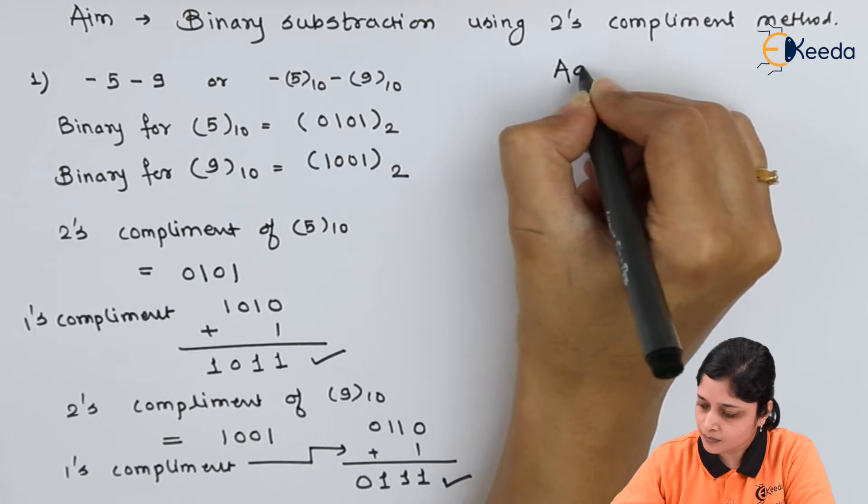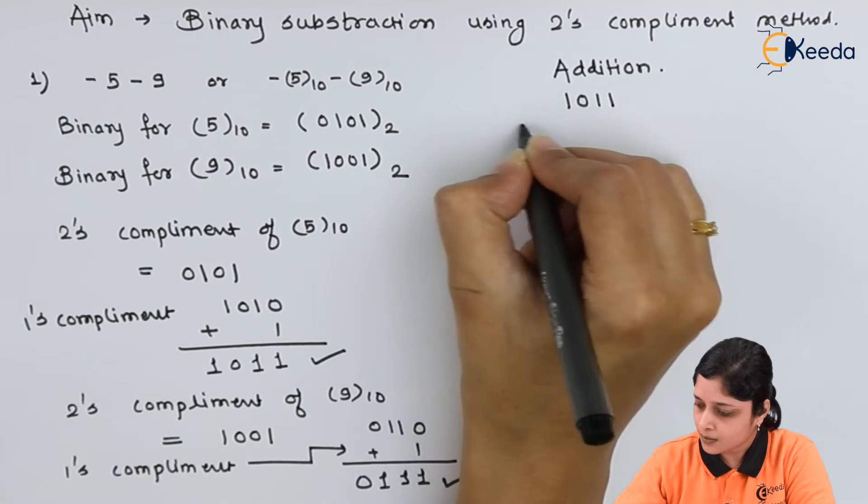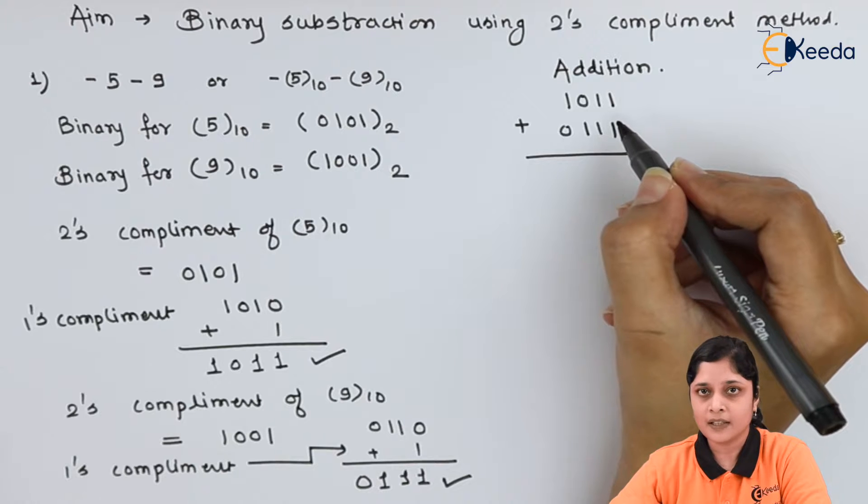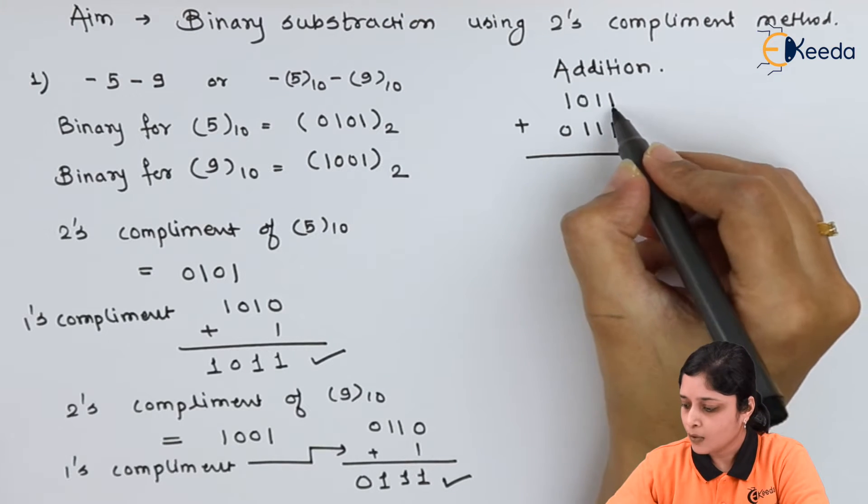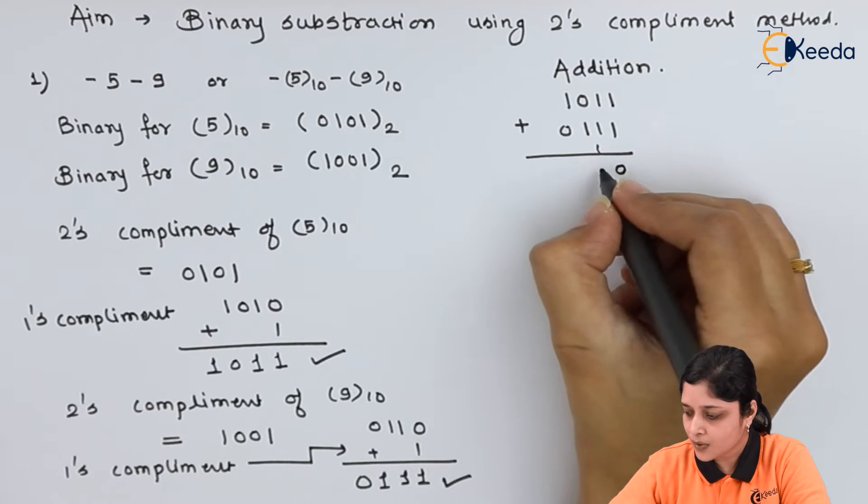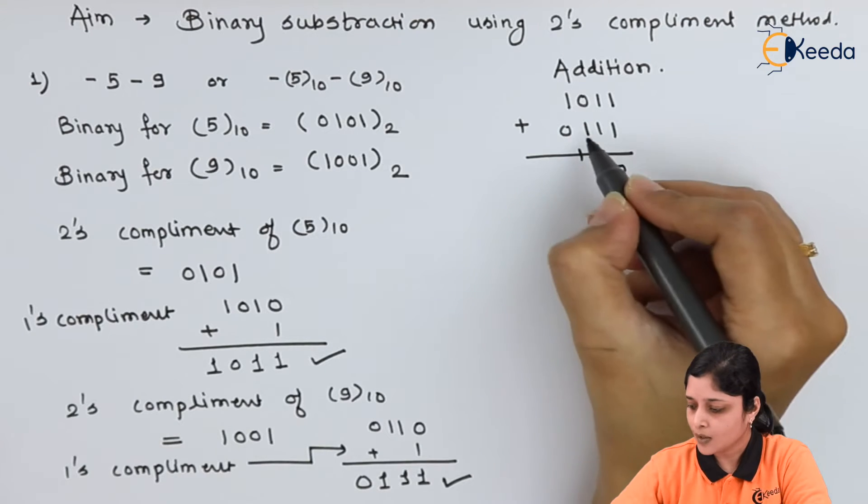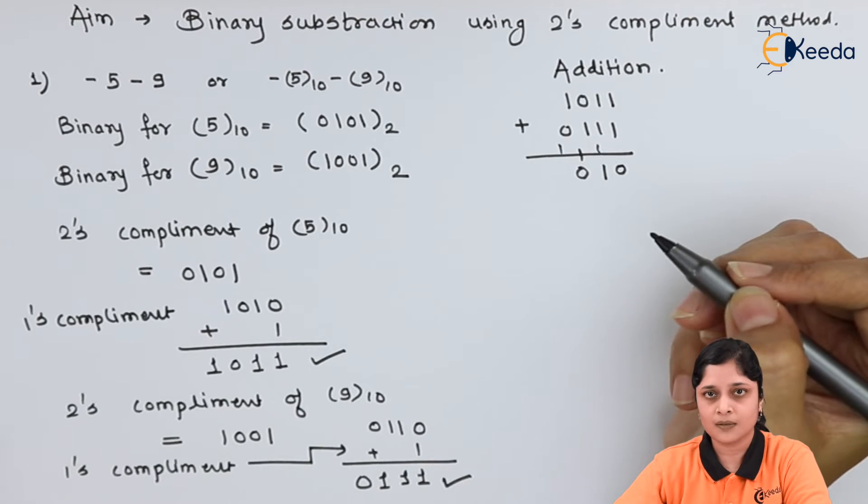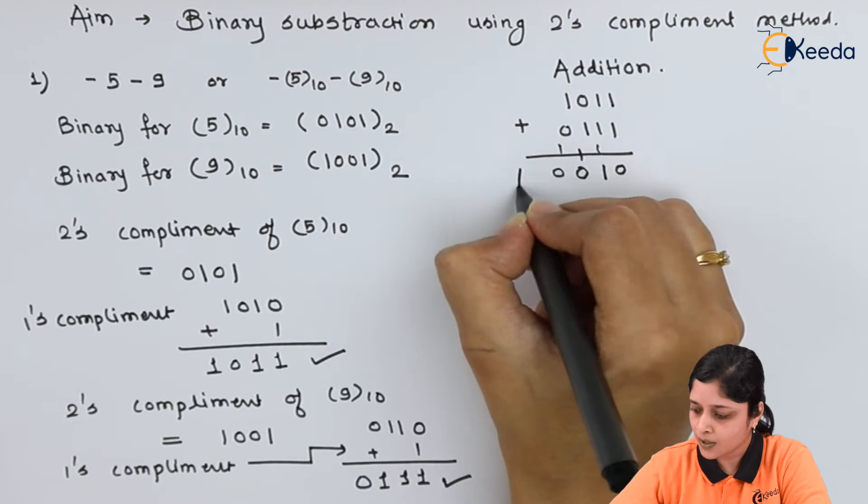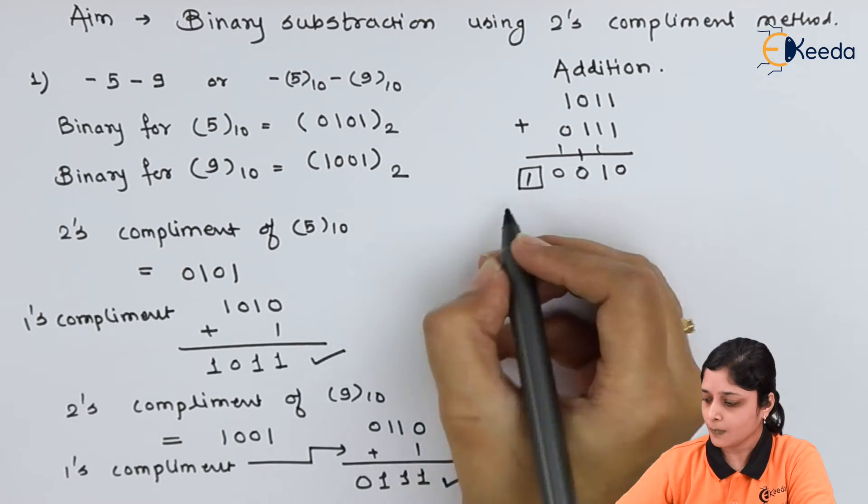Next step is addition: 1011 plus 0111. You should know the binary rules for addition. 1 plus 1 is 0, carry 1. 1 plus 1 plus 1 is 1, carry 1. 0 plus 1 you will get 1. 1 plus 1 is 0, carry 1. 1 plus 0 is 1. 1 plus 1 is 0, carry 1. Here carry is generated, so neglect the carry.